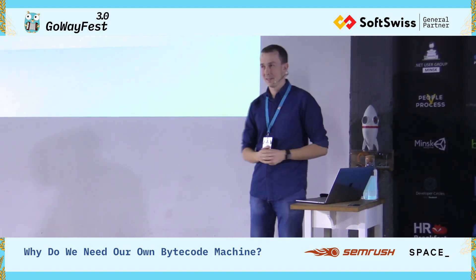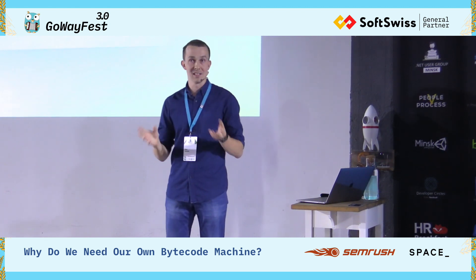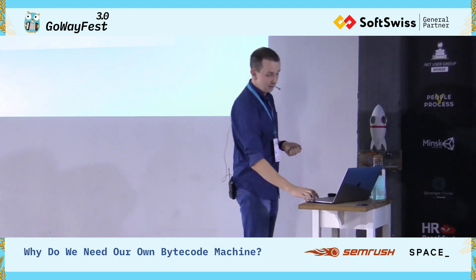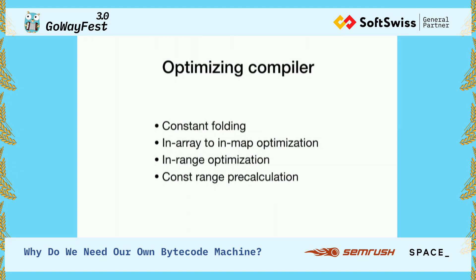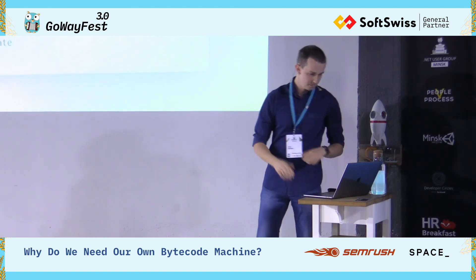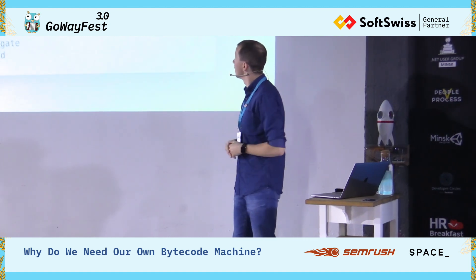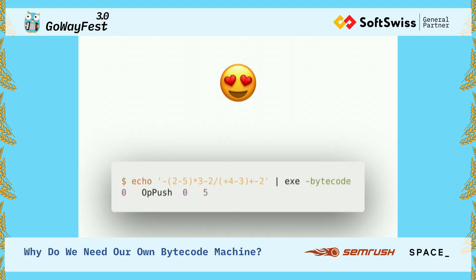I looked at our expressions and collected the most commonly used constructs. I created an optimizing compiler which can optimize expressions and increase performance even further with a variety of optimizations. For example, the first one is constant folding. With constant folding, an expression and its corresponding bytecode can be reduced to just one opcode — which is really what we want.